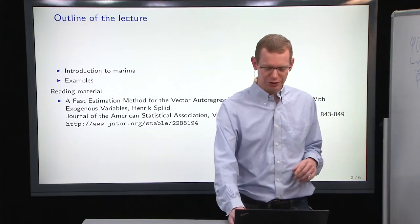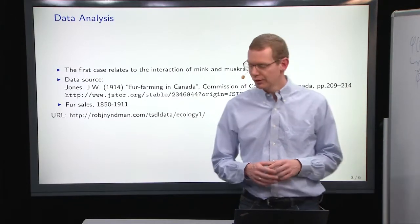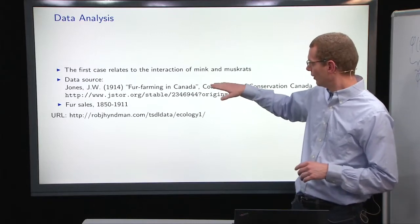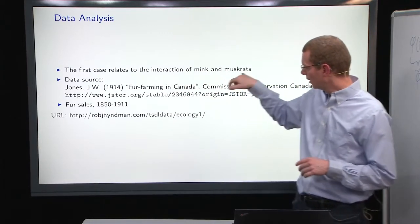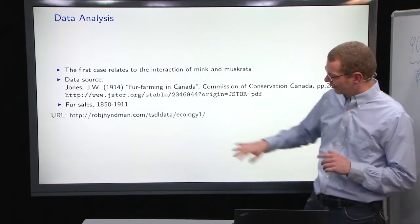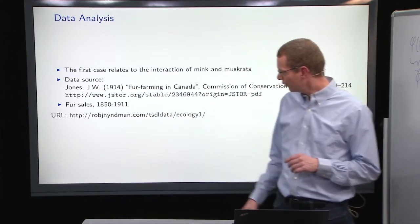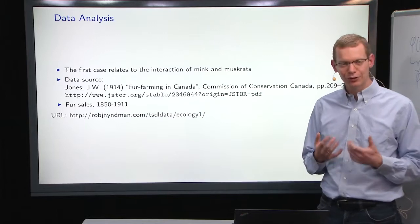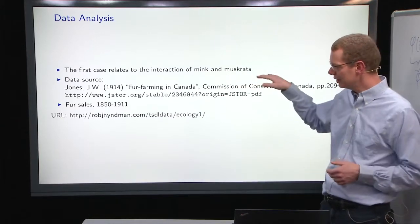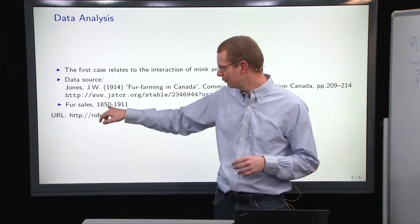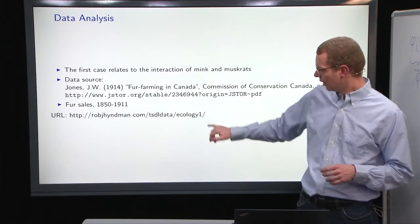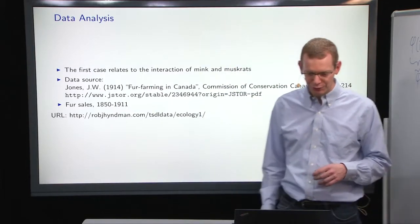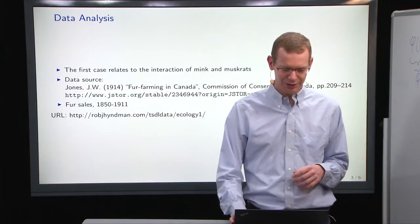As I said, I would also do some other examples. What I will use is an example with data on the interaction between mink and muskrats. It's an old study from 1914 about fur farming in Canada, where you count how many fur skins are traded of two different kinds for a period from 1850 to 1911, and you can get the data from this particular site here.